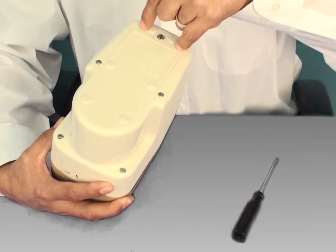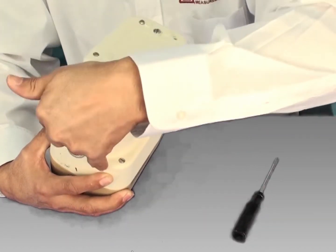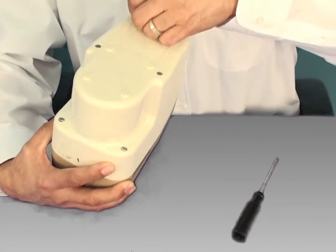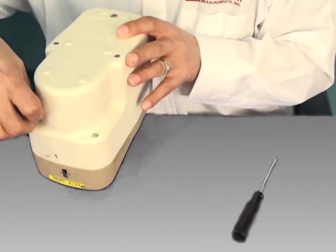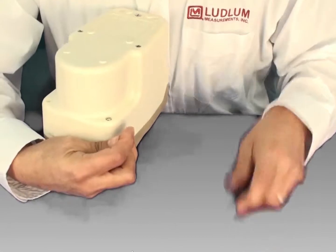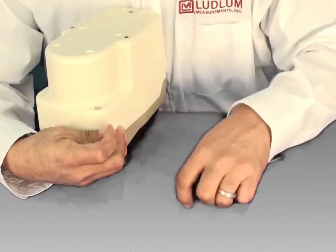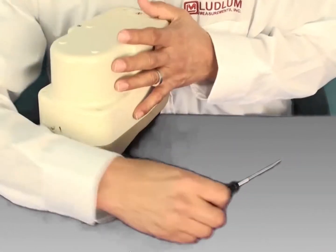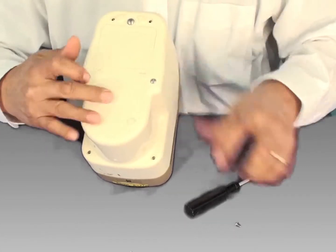It should be the two screws behind the battery compartment and the two screws towards the front and then the remaining two screws.